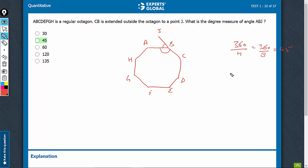Just in case the internal angle was asked, it's always 180 minus 360 upon N. This would have been 135 in this case. Quite a straightforward question. The answer is 45.